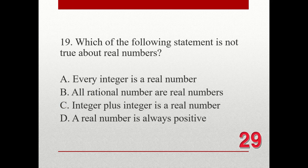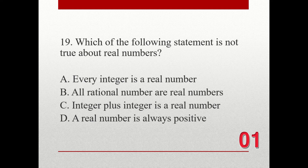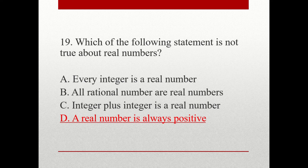Question number 19. Which of the following statements is not true about real numbers? A. Every integer is a real number. B. All rational numbers are real numbers. C. Integer plus integer is a real number. D. A real number is always positive. The correct answer is D. A real number is always positive.